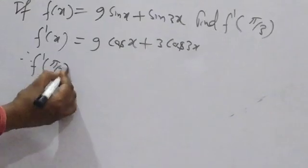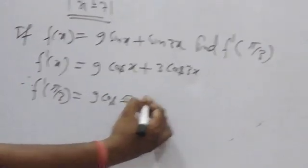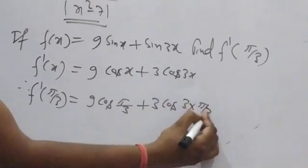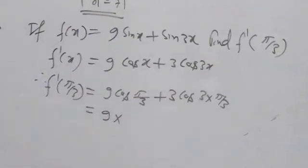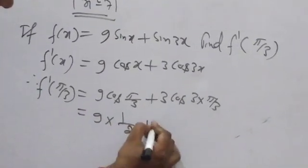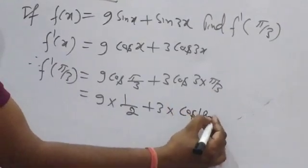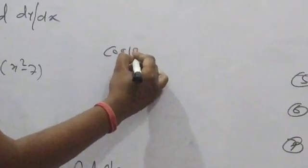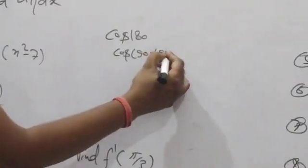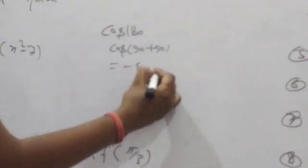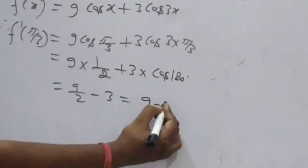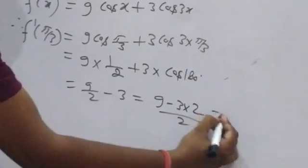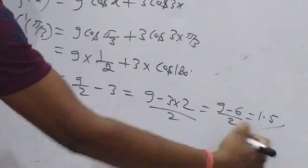Therefore f'(π/3) = 9cos(π/3) + 3cos(3 × π/3). That gives 9 times cos60° = 9 times 1/2, plus 3 times cos180°. cos180° = −1. So we get 9/2 − 3 = (9 − 6)/2 = 3/2 = 1.5.